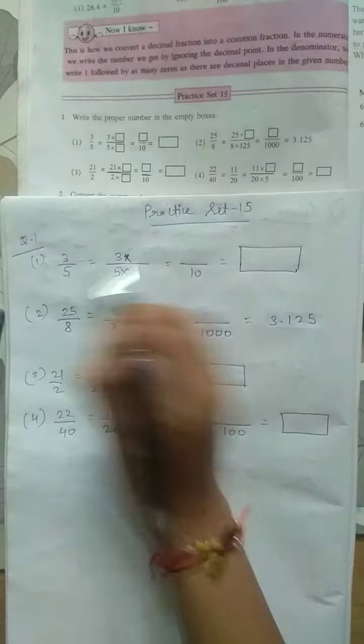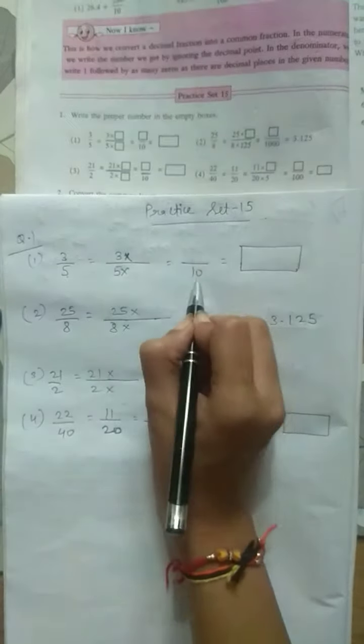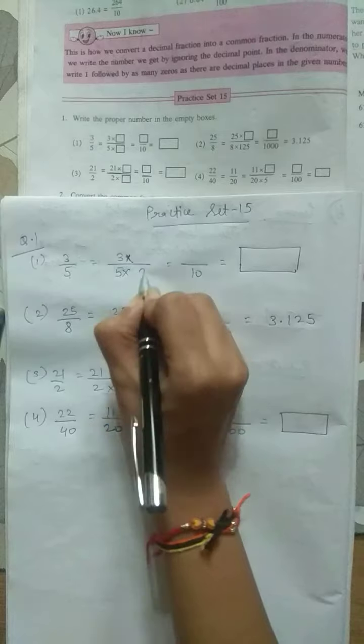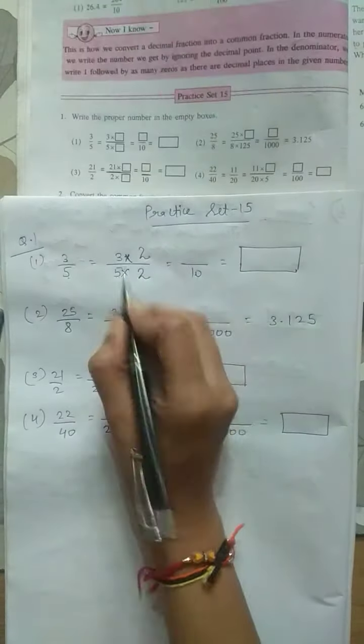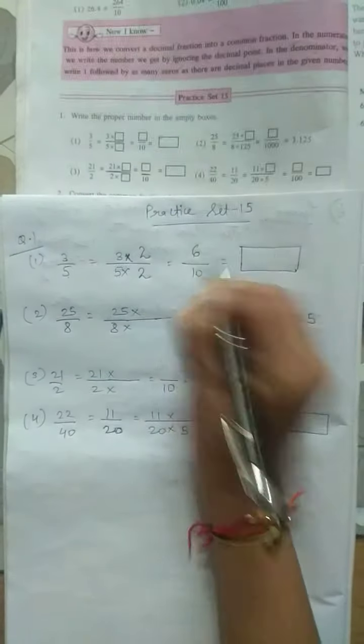Now see 3 upon 5. This 5 has been converted into 10, so we have to multiply by 2. 5 times 2 is 10. So in the numerator also multiply by 2. 3 times 2 is 6.